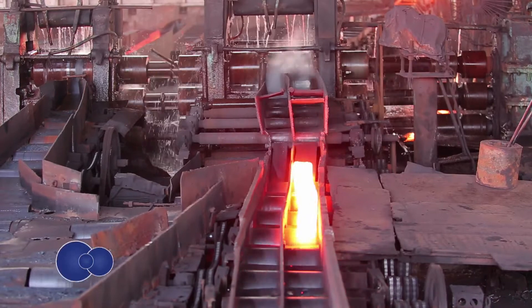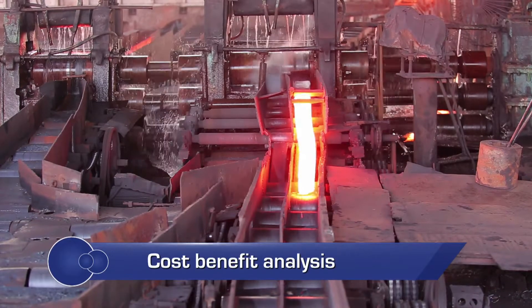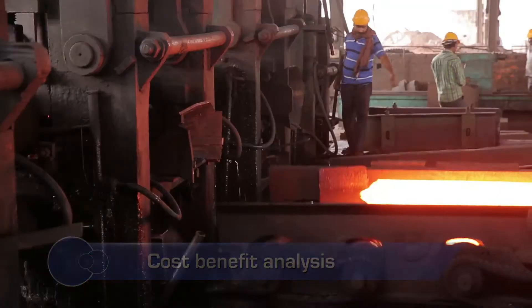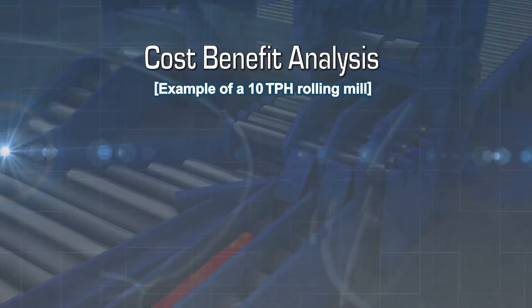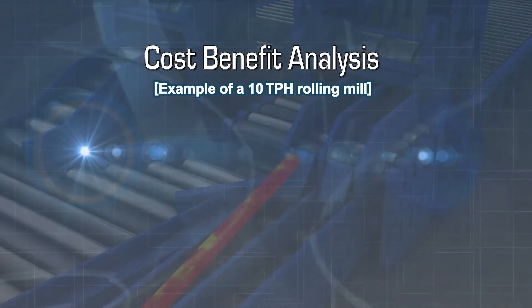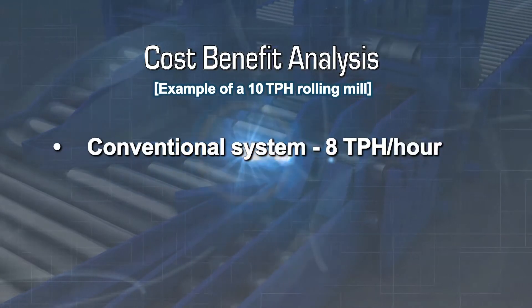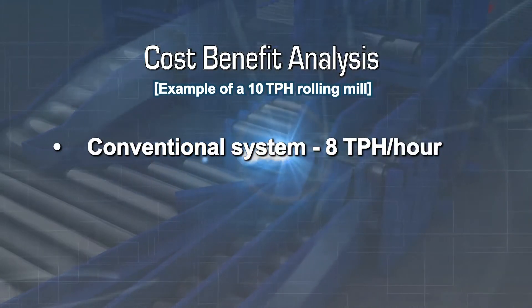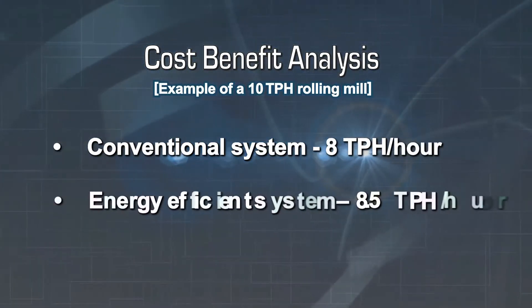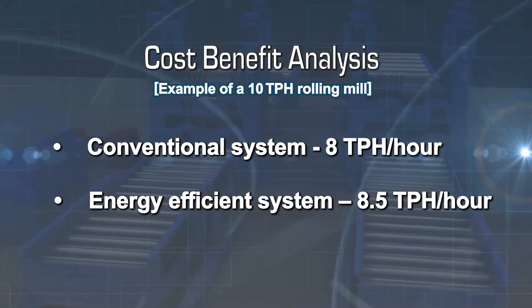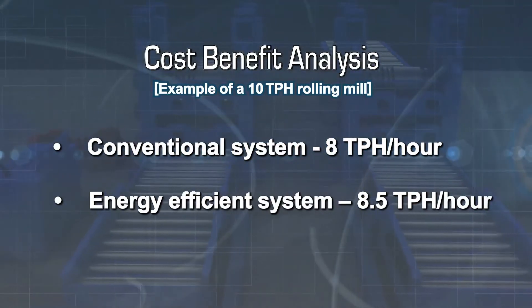Automatic material handling systems like Y-table, tilting table and repeaters contribute towards increasing the mill utilization. To understand the cost benefit, let us consider a 10 TPH rolling mill. With manual handling, the plant was able to produce 8 TPH every hour. With automatic material handling system, the same plant is able to produce 8.5 TPH.